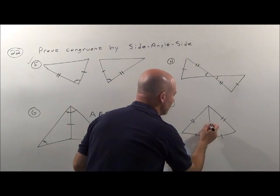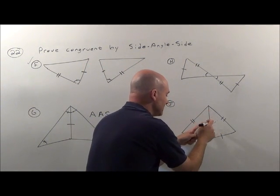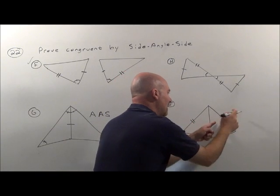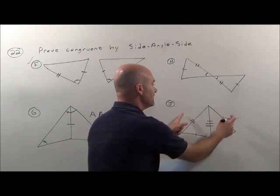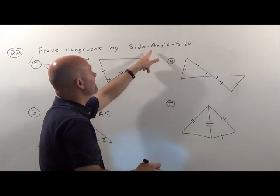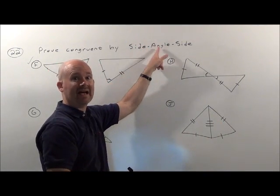Here it wants us to match up this side. This side is being shared with the left triangle and with the right so that guy matches up. Those would be congruent by side-side-side. But again, it doesn't want side-side-side. It wants it by side-angle-side.